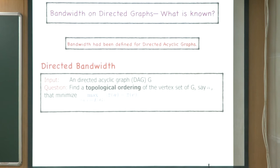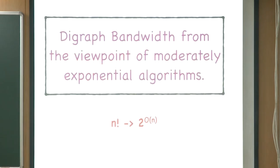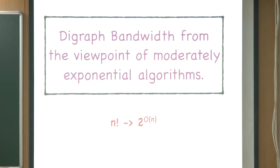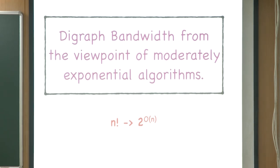This paper studies the digraph bandwidth problem from the viewpoint of moderately exponential algorithms. Since it's a layout problem, an n-factorial algorithm is trivial. The first question is: can we go from n-factorial to 2^O(n)? This paper is an attempt at that, though we haven't fully resolved it.